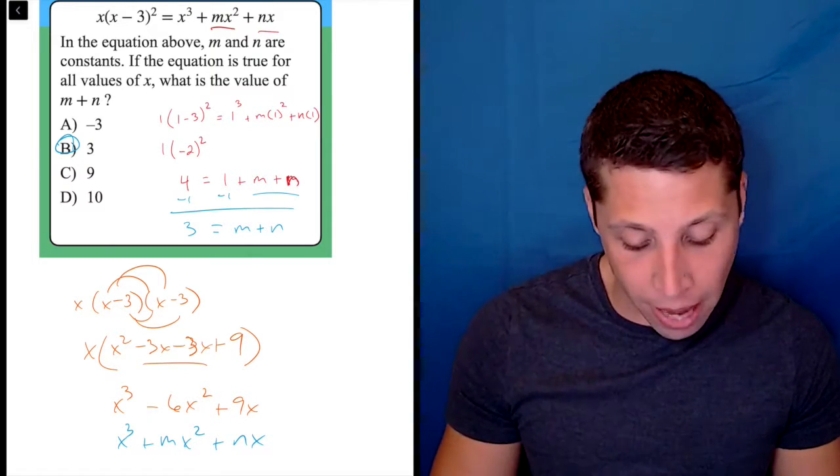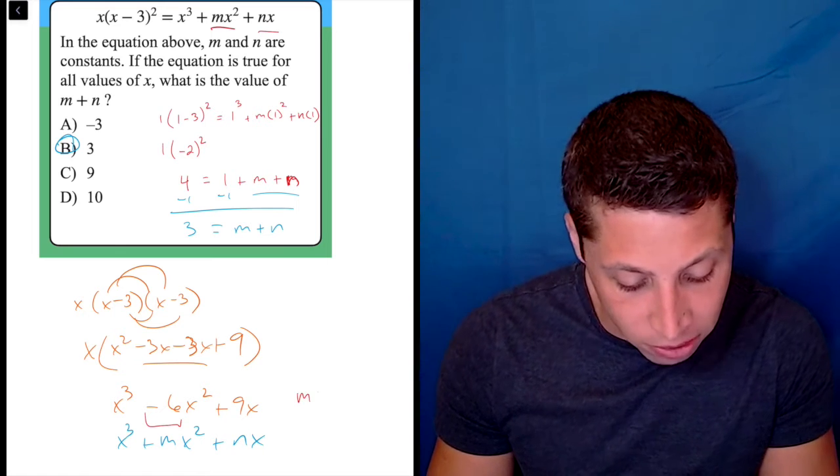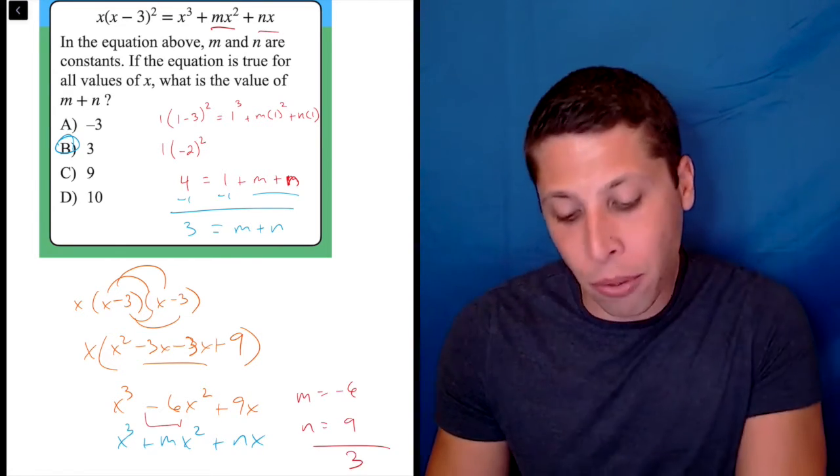where now I don't have to guess what m and n are. I have equivalents. So m in this case would be -6, n would be 9, add them together, we get positive 3.